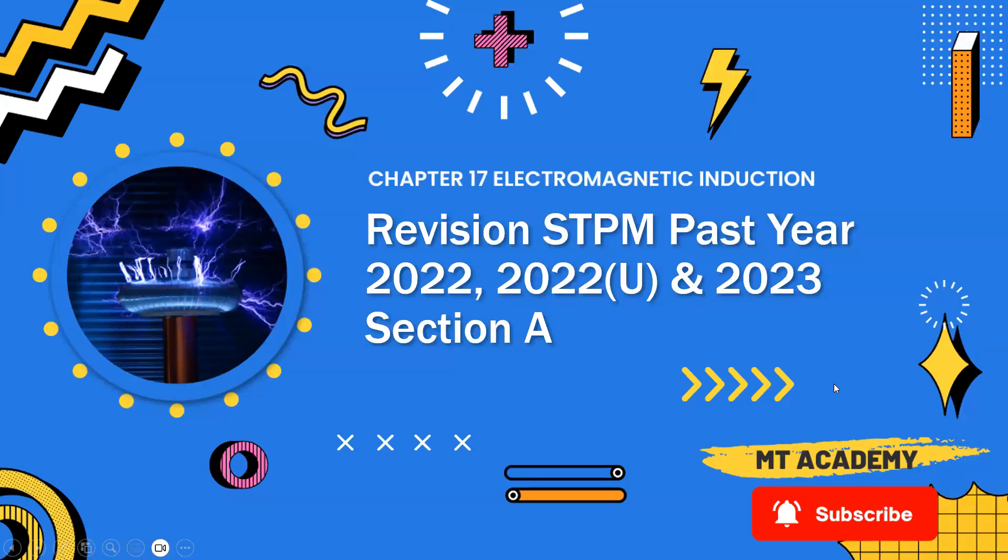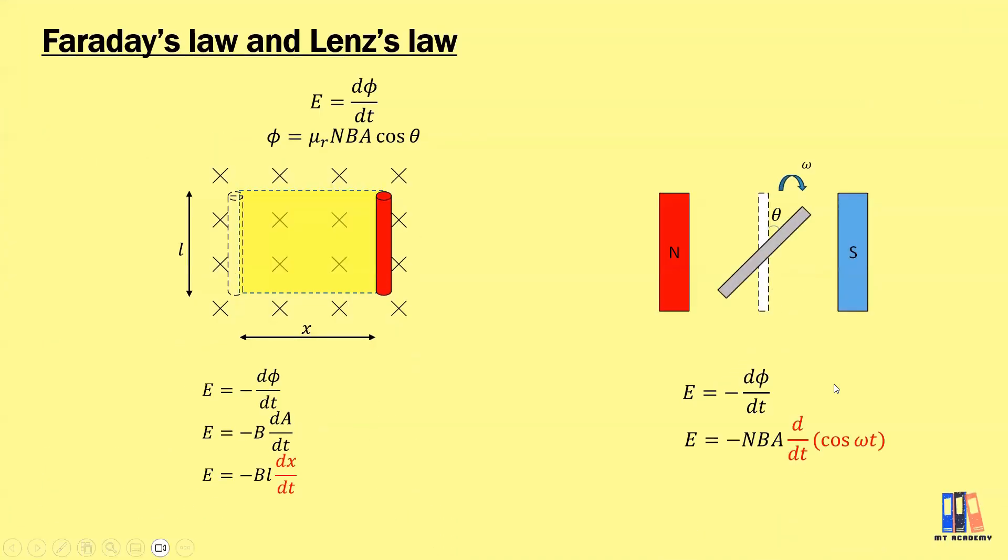Today, we will continue to discuss the past year questions in Chapter 17, Electromagnetic Induction. The basic principle about this topic is Faraday's law and Lenz's law. Faraday's law tells us that E equals dφ/dt, and Lenz's law provides the direction of the induced EMF. We also learn that magnetic flux equals μr NBA cosθ, where μr is the permeability of the medium.